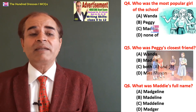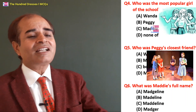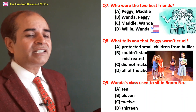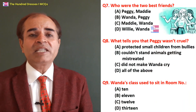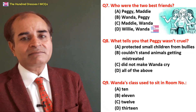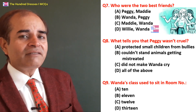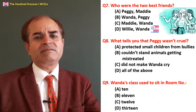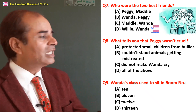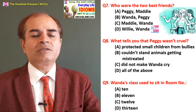Sixth question: What was Maddy's full name? Maddy's full name appeared in the first line of the lesson — Madeline. B is the right answer. Seventh question: Who were the two best friends in the story? Four pairs will be given as answer options. Peggy and Maddy? Wanda and Peggy? Maddy and Wanda? Willi and Wanda? Willi was just a minor character. A is the right answer — Peggy and Maddy were the two best friends.